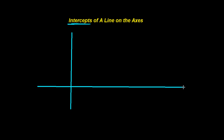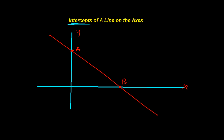So intercept means something like this: if we have the y-axis and x-axis, and I have a line that is cutting the y-axis at point A and cutting the x-axis at point B. The coordinate of point B is (x, 0) because it's on the x-axis, and the coordinate of point A is (0, y) because it's on the y-axis.